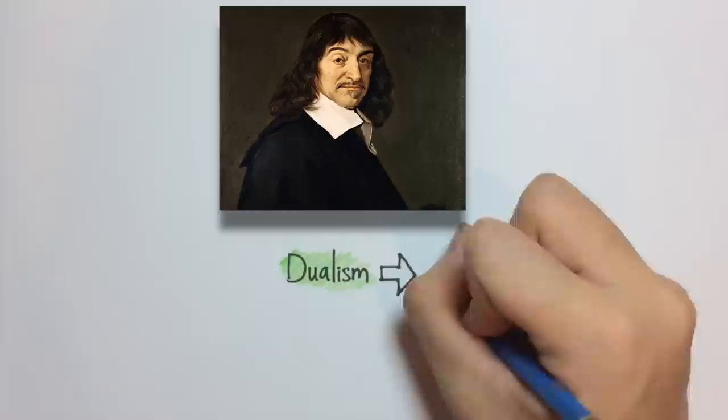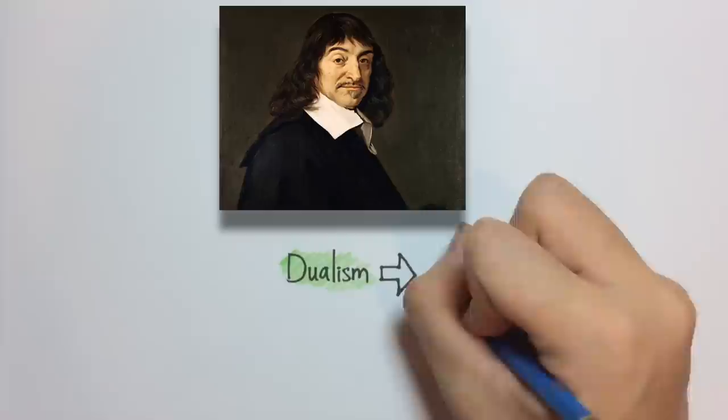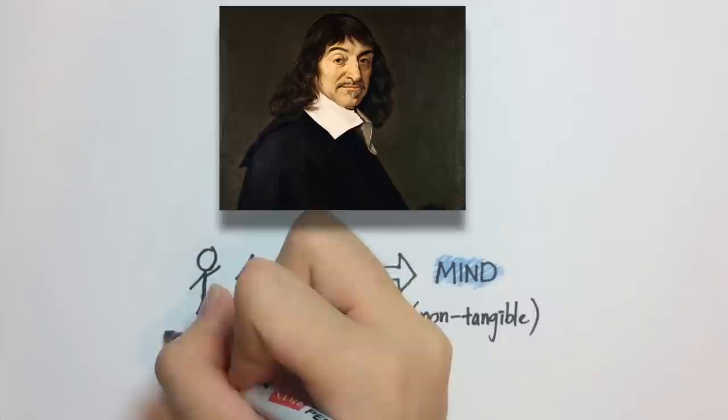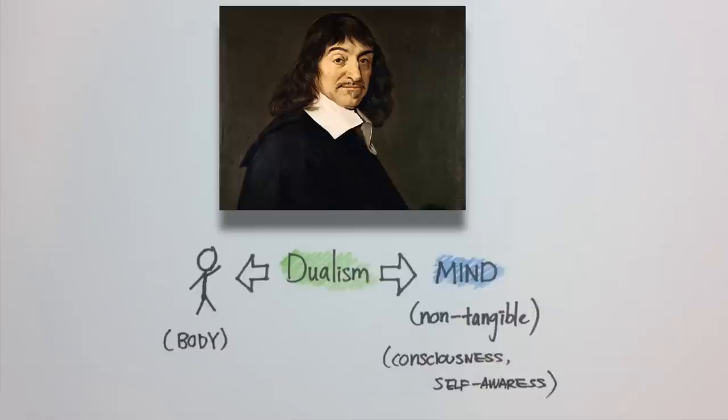Rene Descartes, a French mathematician and philosopher, presented an idea called dualism, suggesting that there exists both the body and the mind. Descartes thought that the mind is separate from the body and is identified with consciousness and self-awareness. However, his explanation doesn't really explain how consciousness arose.